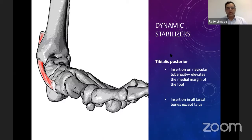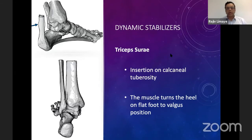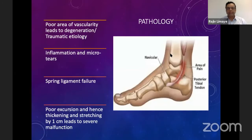The posterior tibial tendon is mainly inserted on the navicular, but it also appears to insert on to the other parts of the mid-foot bones. The triceps surae is important in maintaining the position of the calcaneus in a neutral position. As in flat foot deformity, this muscle turns to work in the form of a valgus deforming force, and later on the heel goes into valgus. The condition can be seen due to hypovascularity, and that is the area where the tendon ruptures, or it leads to some micro tears initially, and then even a small tear can turn into a complete tear with some traumatic etiology.